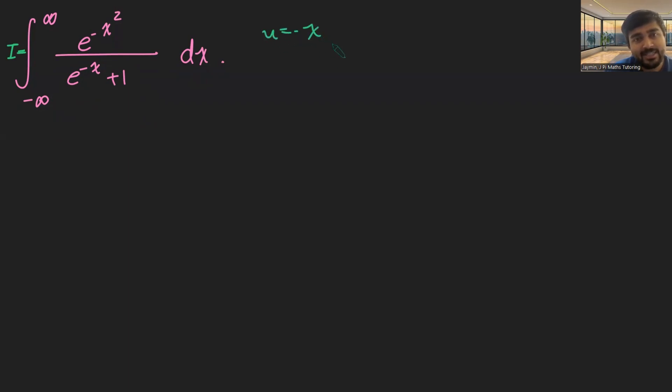That substitution is going to be u equals minus x. And if I do u equals minus x, that just means du is minus dx, and so dx is just minus du. So what does this integral here become?